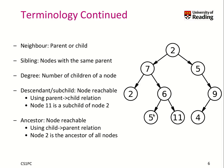A descendant or subchild is a node that is reachable from a specific parent. So from parent 7, we can reach nodes 5 and 11 — so they are both descendants. And 6 is also a descendant of 7, by the way. An ancestor is the opposite direction — from node 5, that is a node reachable towards the root. So 5 has ancestors 6, 7, and 2. And 2 is of course the ancestor of all nodes because it is our root.